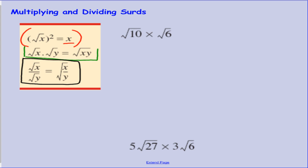Going into some examples. Here we have the square root of 10 times the square root of 6. According to our rule, we can put those together under the one square root sign. So we can have 10 times 6, under the one square root. So that gives us the square root of 60.